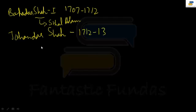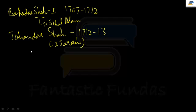After Bahadur Shah I, the noble Zulfikar Ali Khan started playing a prominent role and is prominently known for the Ijara system. For details on this, refer to Lecture 2. Then came a very important king whose name is Farrukhsiyar.